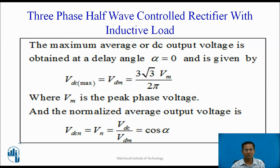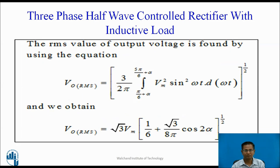The maximum average DC output voltage is obtained at delay angle alpha equal to 0 degree: Vdc_max = Vdm = (3√3 Vm)/(2π), where Vm is the peak phase voltage. The normalized average output voltage is Vdcn = Vn = Vdc/Vdm = cos(α). Generally, when alpha is minimum, average output voltage is maximum, and when alpha is maximum, average DC voltage is minimum. The RMS value of output voltage is: V0_rms = √[(3/2π) × integral from pi/6+α to 5pi/6+α of Vm² sin²(ωt) dωt] = √3 Vm × √[1/6 + (√3)/(8π) × cos(2α)].